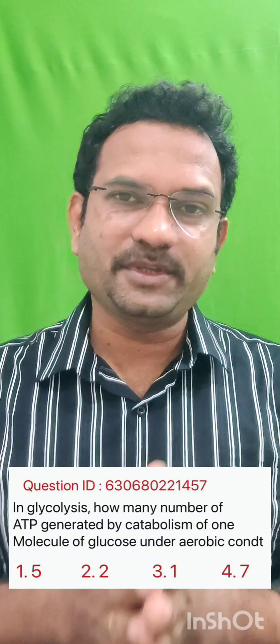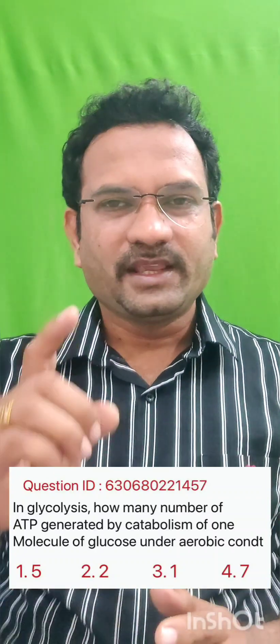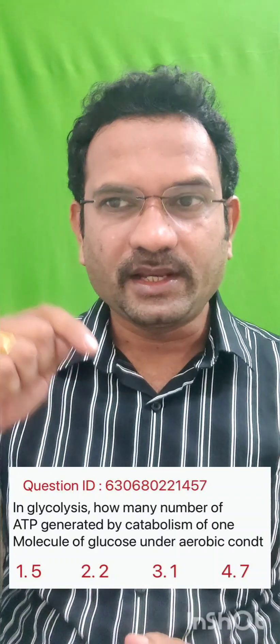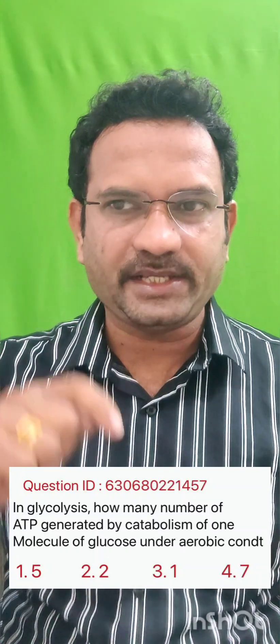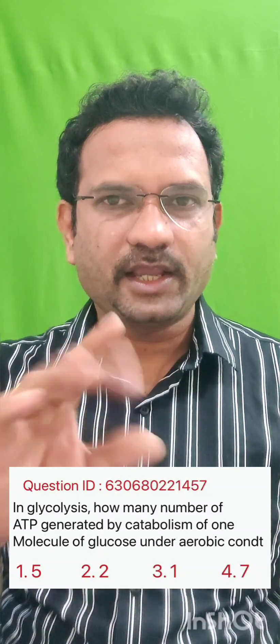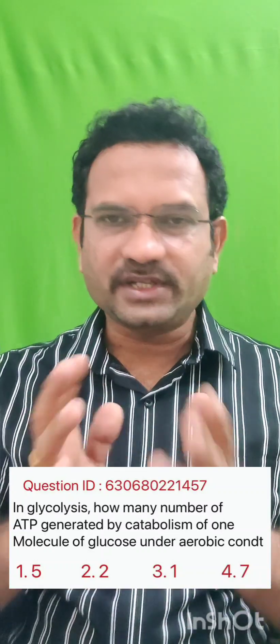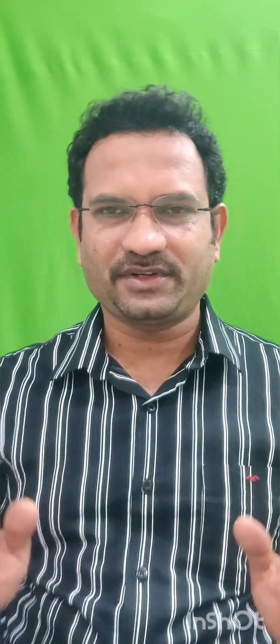Now, there is a lot of confusion about this question. Look at the question: In glycolysis, how many ATP molecules are generated by the catabolism of one molecule of glucose under aerobic conditions? Glycolysis itself does not directly require oxygen, but under aerobic conditions it feeds into further pathways.